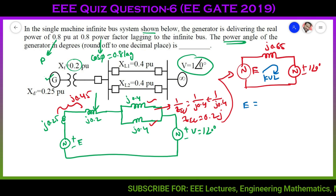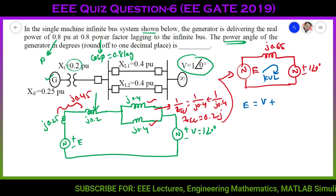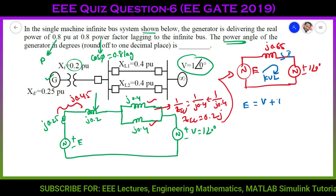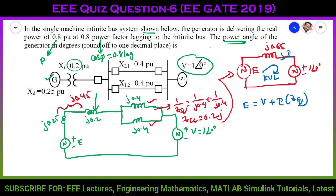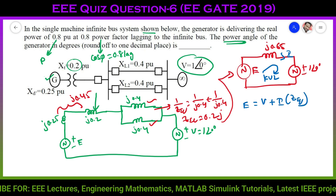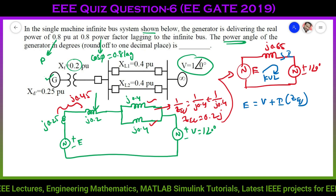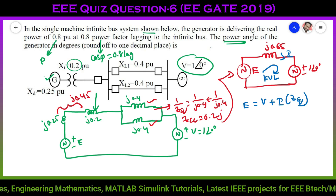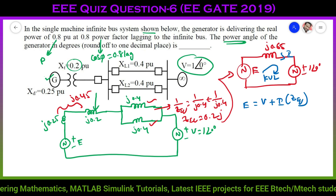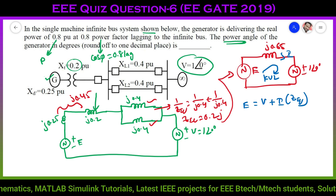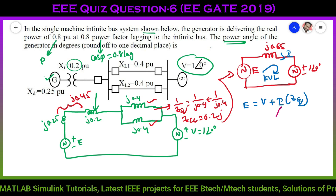Applying KVL to this simplified circuit: E = V + I·Z_equivalent. We know V = 1∠0° and Z_equivalent = j0.65, but we don't know the current I, so we need to calculate it.